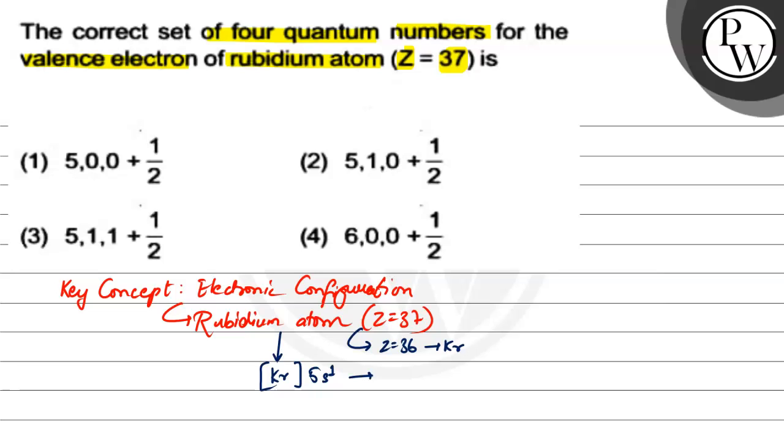So 5s¹ is the 5s orbital, and then we can write that n is 5 and l is 0. And because l is 0, we will have the magnetic quantum number m as 0, and then spin can be plus or minus 1/2.